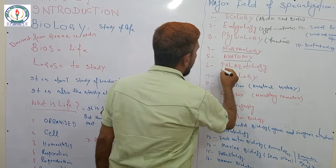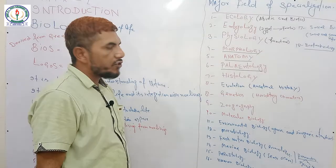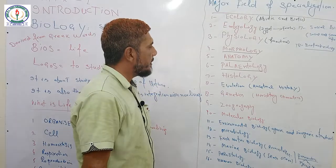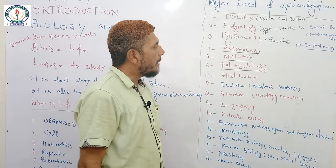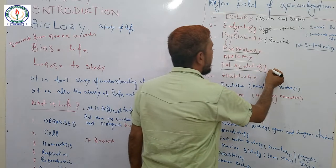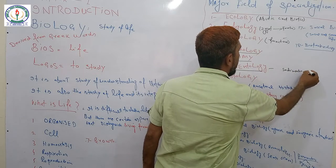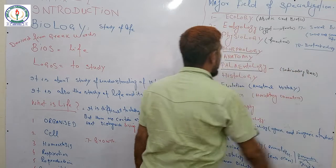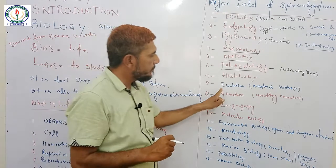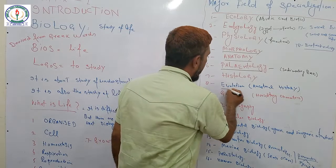Paleontology is the branch in which we study fossils. Fossils are the dead remains of plants or animals and their impressions, and are mostly found in sedimentary rocks. Histology is the study of tissues. Evolution is the discipline of biology in which we study ancestral history.